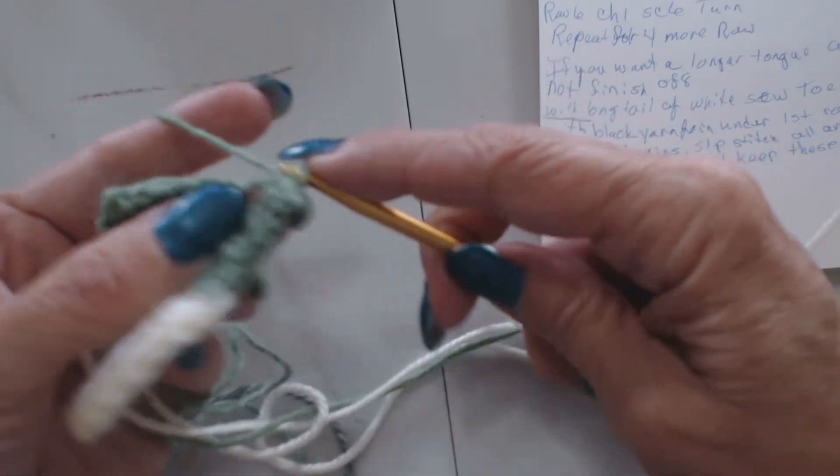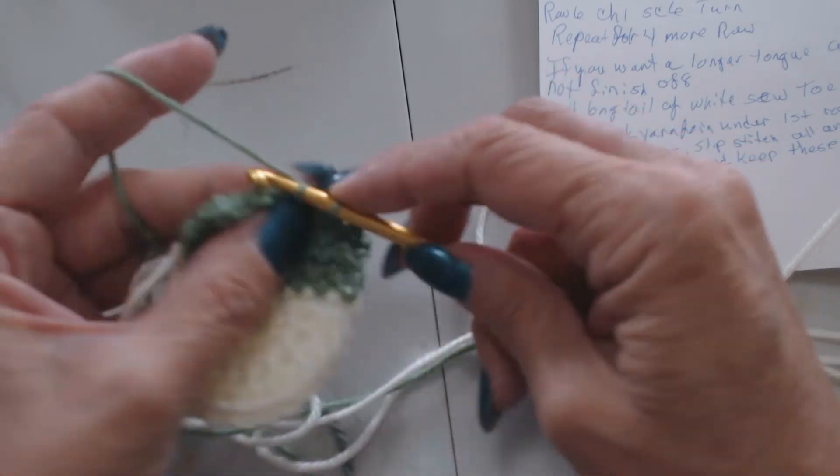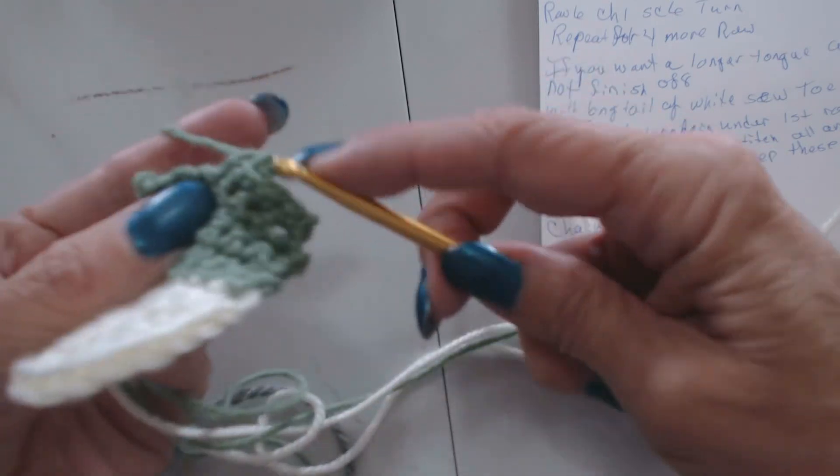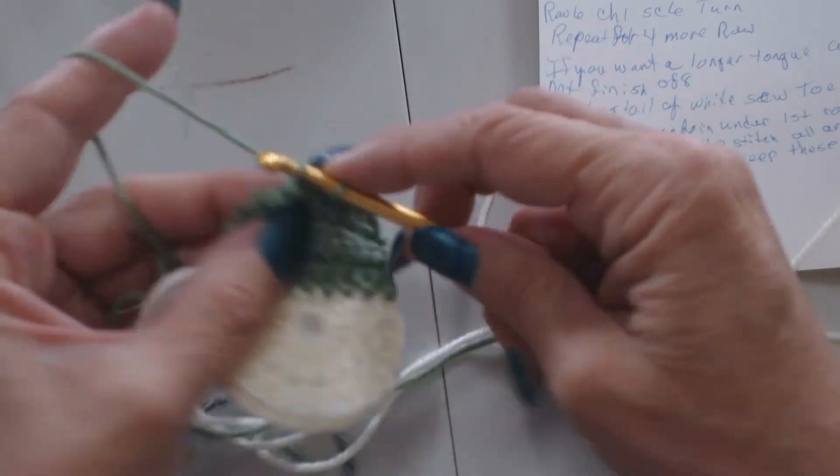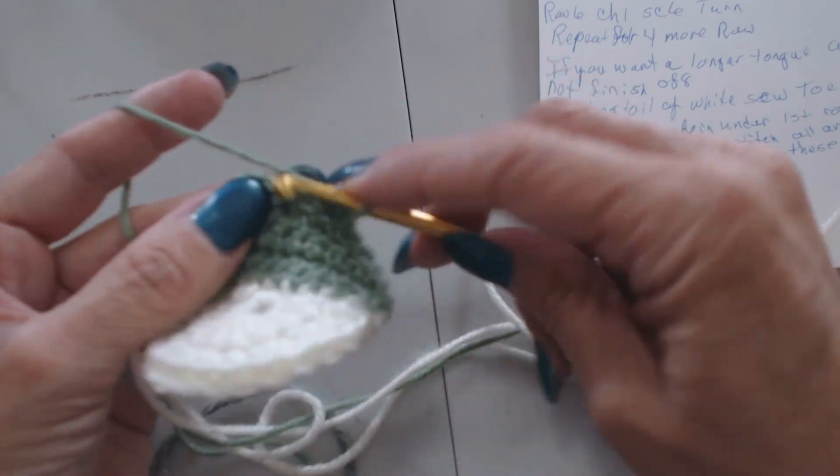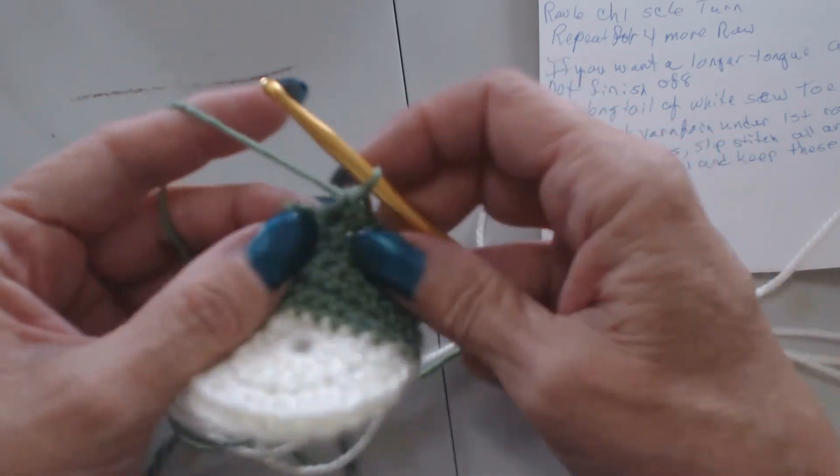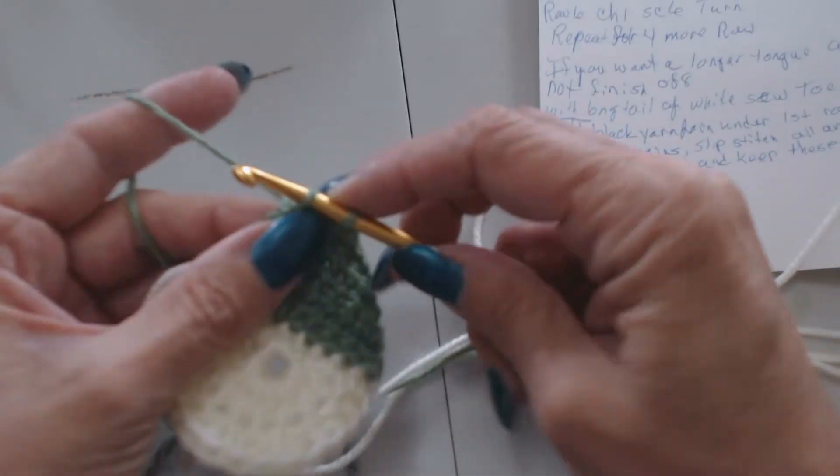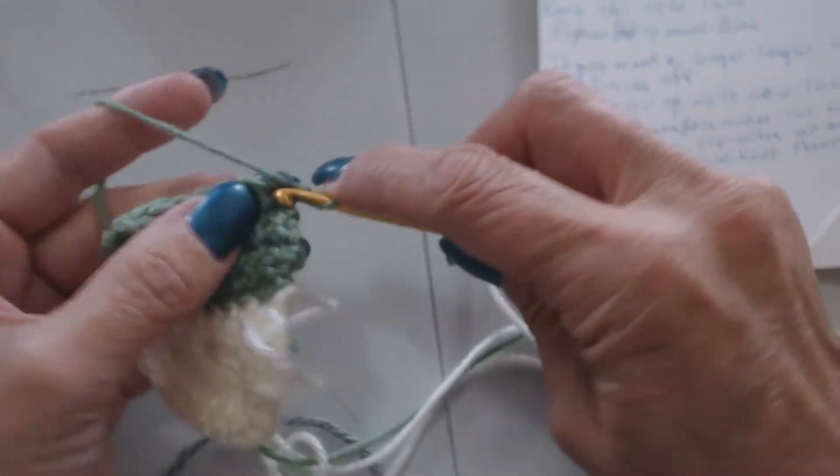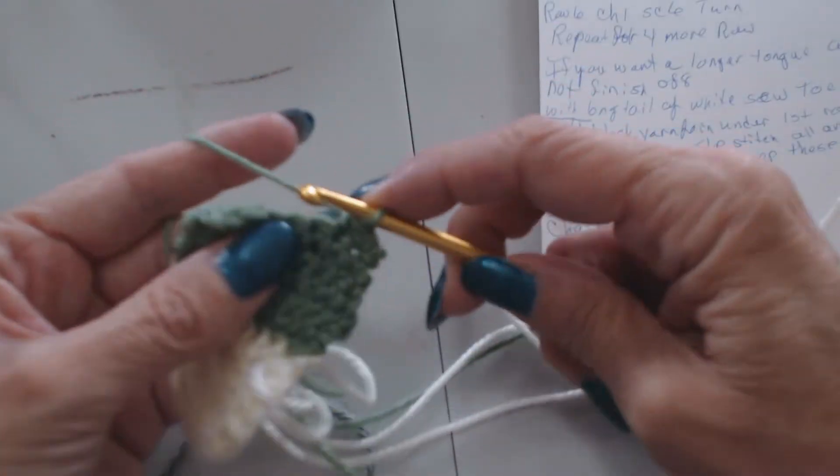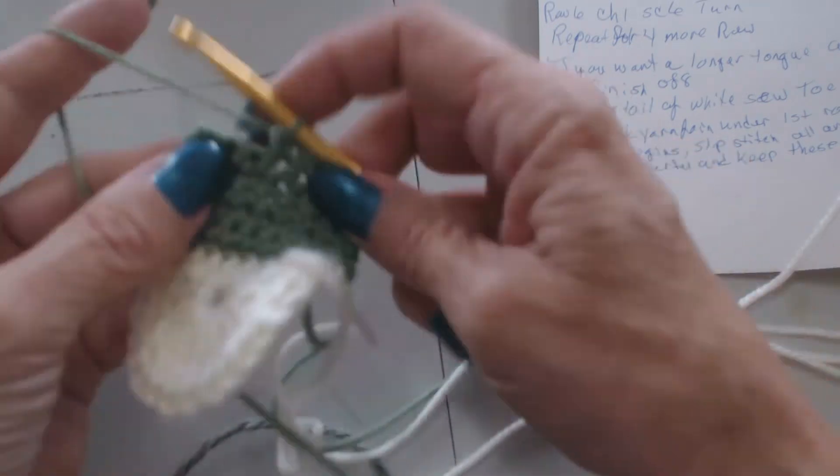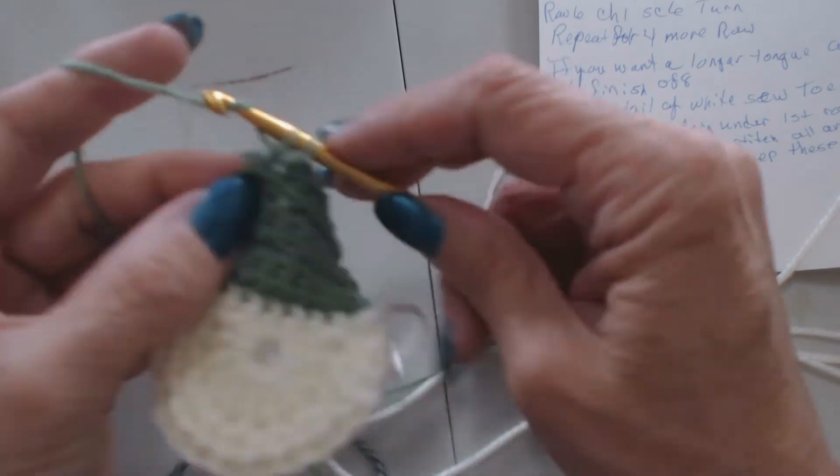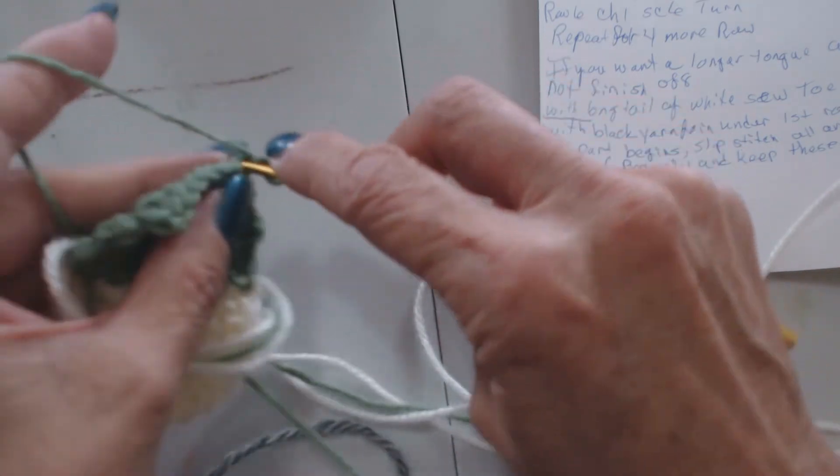Now here is where you do this at least five more rows. And this all depends upon how long you want your tongue of your shoe, or how long you need the tongue of your shoe.